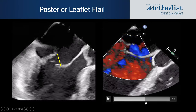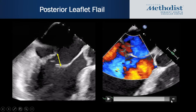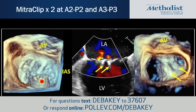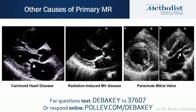An example of a posterior leaflet flail leads to significant and eccentric, anteriorly directed mitral regurgitation. This patient underwent mitral clip implantation given high surgical risk. The 3D image shows the P2 and P3 flail, and the patient underwent implantation of two mitral clips with significant reduction in mitral regurgitation. Other causes of primary MR include carcinoid heart disease, characterized by endocardial plaques of fibrous tissue affecting the leaflets and subvalvular apparatus, causing a coaptation defect.